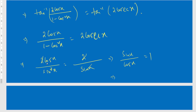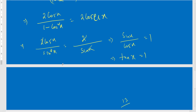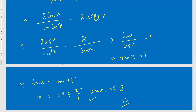So cos x / sin x = 1, which means sin x / cos x = 1, i.e., tan x = 1. Since tan x = 1, x = π/4. The general solution is x = nπ + π/4, where n belongs to ℤ. We must write the general solution for full marks.